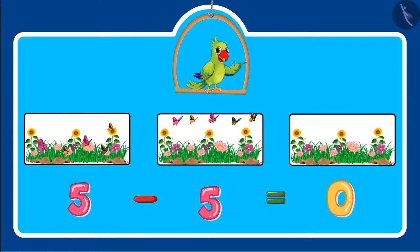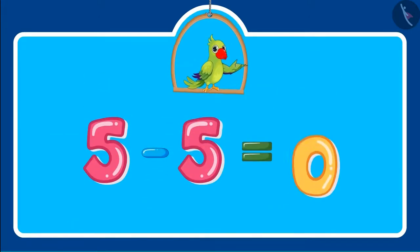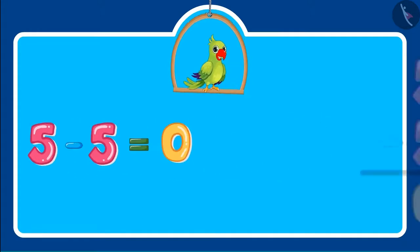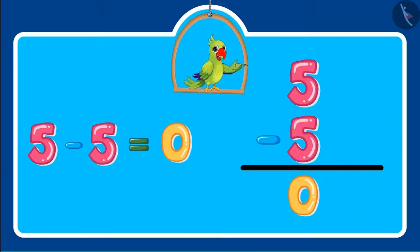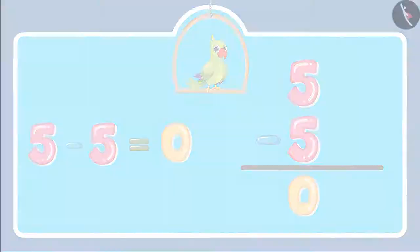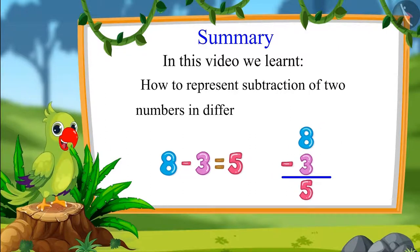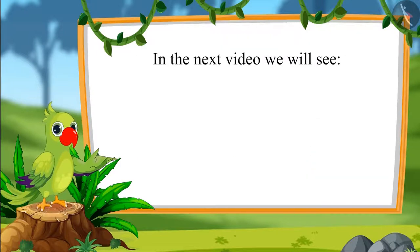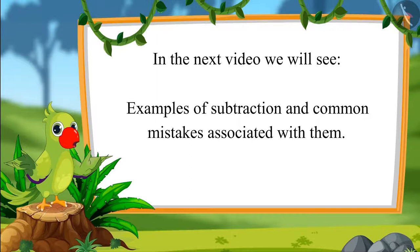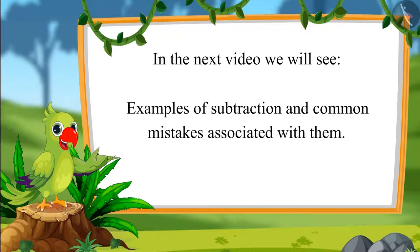So children, did you see that if we subtract five from five then zero is left? Come on, now let us write this also in a systematic way. That was all for today. In this video we learned how to represent the subtraction of two numbers in different systematic ways. In the next video we will see some more interesting examples and learn about some common mistakes that should not be made. Till then, bye friends!